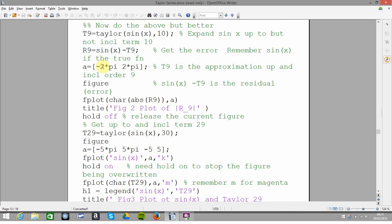Define my axis points again, do my fplots, do my t29. And then here plot my 29 as well. So remember I'm doing order 10 and order 30.